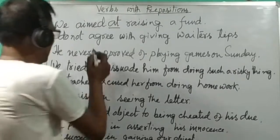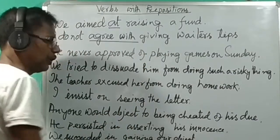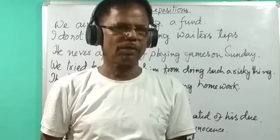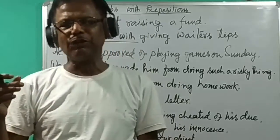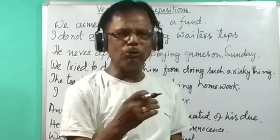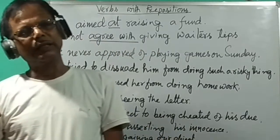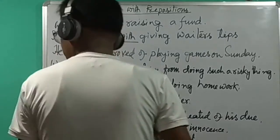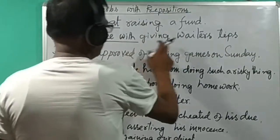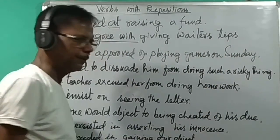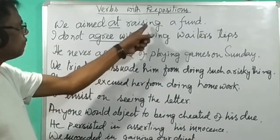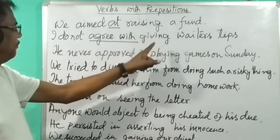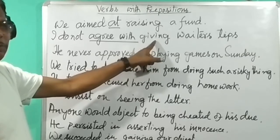I do not agree — agree takes a preposition. Sometimes agree takes two words depending on the construction: sometimes we say agree to, sometimes agree with a person. For example: I do not agree with giving waiter steps. 'Giving' is the ING form of the verb.